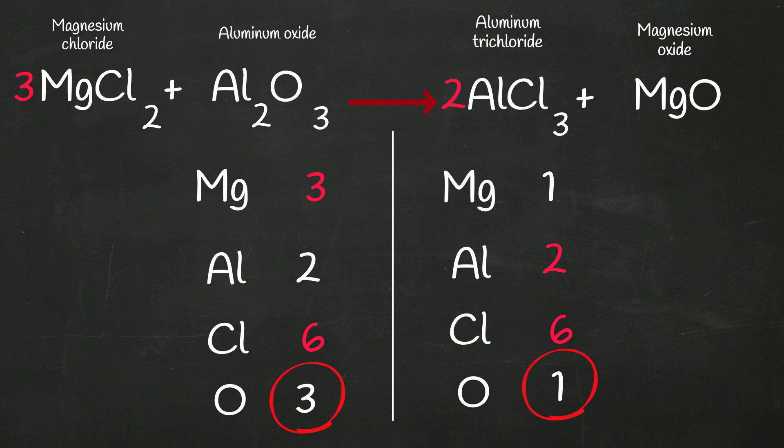So why don't we just put a coefficient of three with the magnesium chloride, excuse me, magnesium oxide. And when we multiply this, that gives us three magnesiums and three oxygens. And look, we are now balanced.